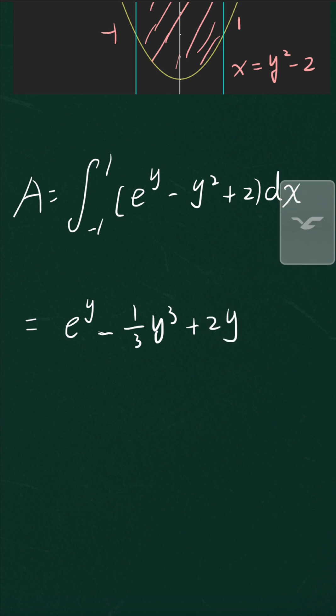Oh sorry, that's one thing I got wrong. The variable here is not x, it should be y. So with respect to the variable y from -1 to 1.